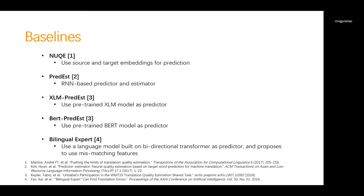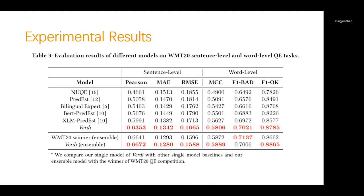We also compare our method with five baseline methods including NUQE, PREDEST, XLM PREDEST, BERT PREDEST, and Bilingual EXPERT, which are the recent state-of-the-art QE models. In this table, we first compare performance of our Verdi with the mentioned baseline method, and then compare our ensemble model with the winning system of the WMT20 QE competition. You can see that in single models, Verdi achieves the best performance on both word- and sentence-level QE tasks, significantly outperforming other baseline methods. And our ensemble model also beats the WMT20 winning system.